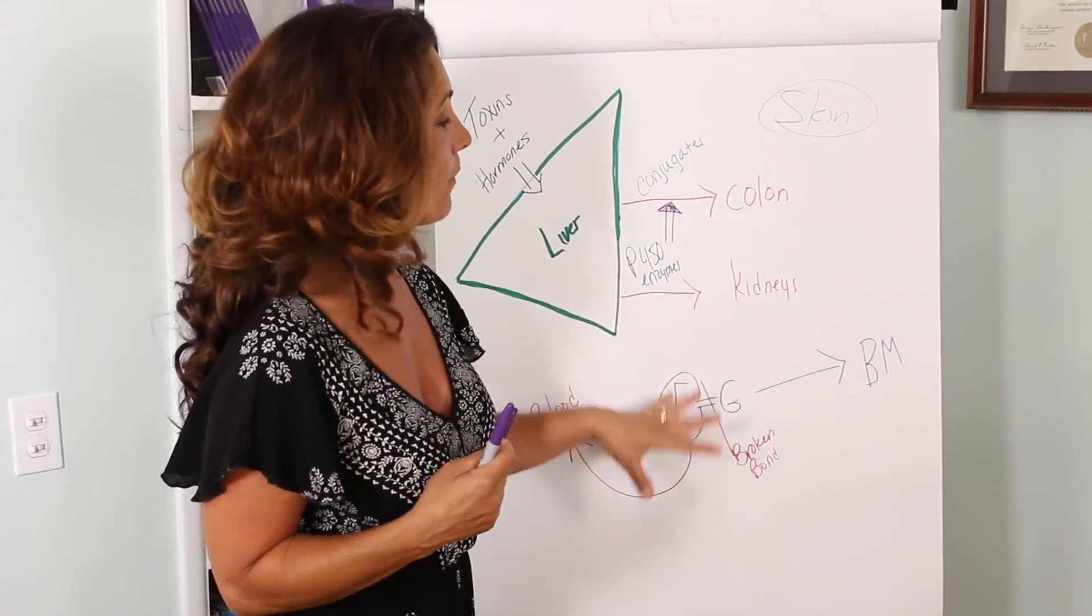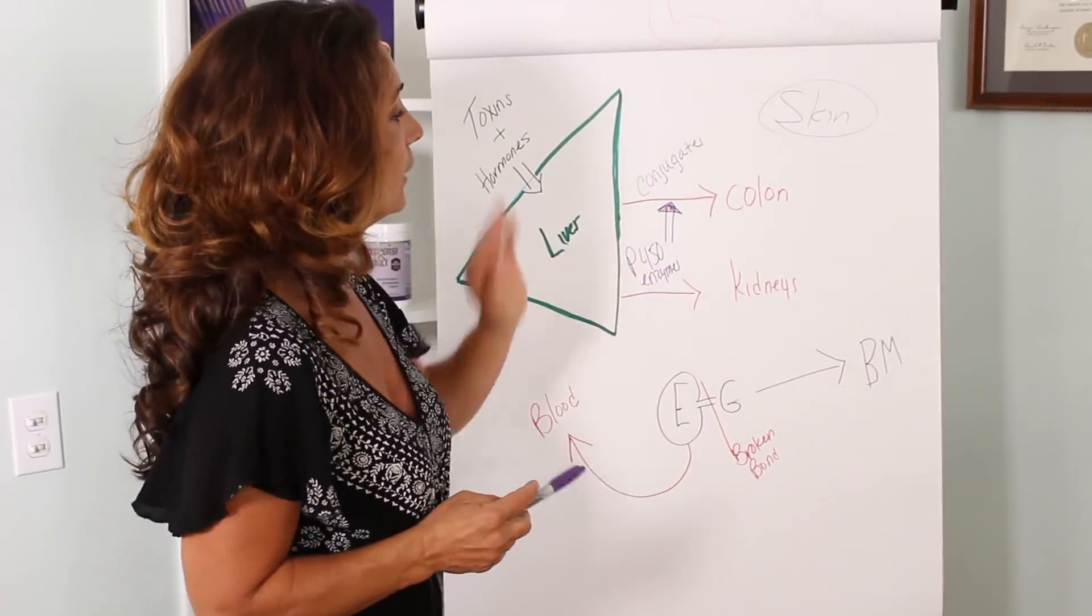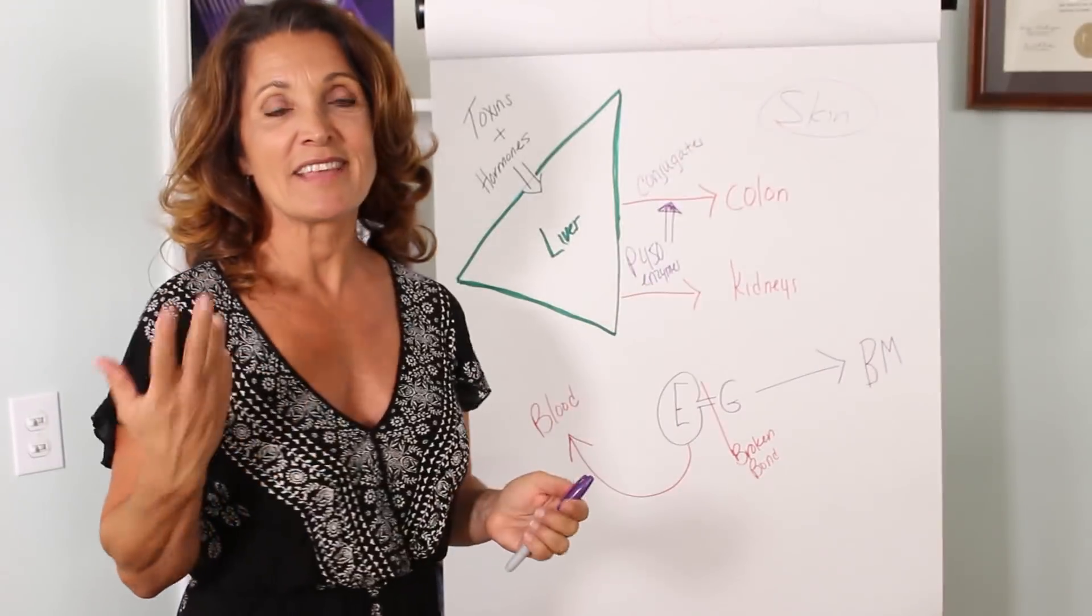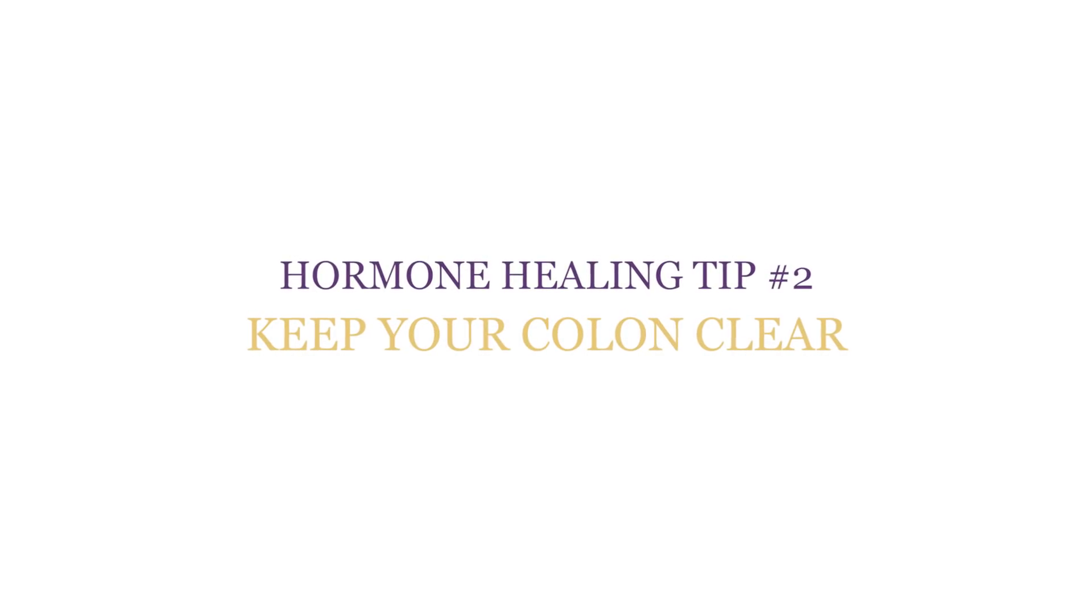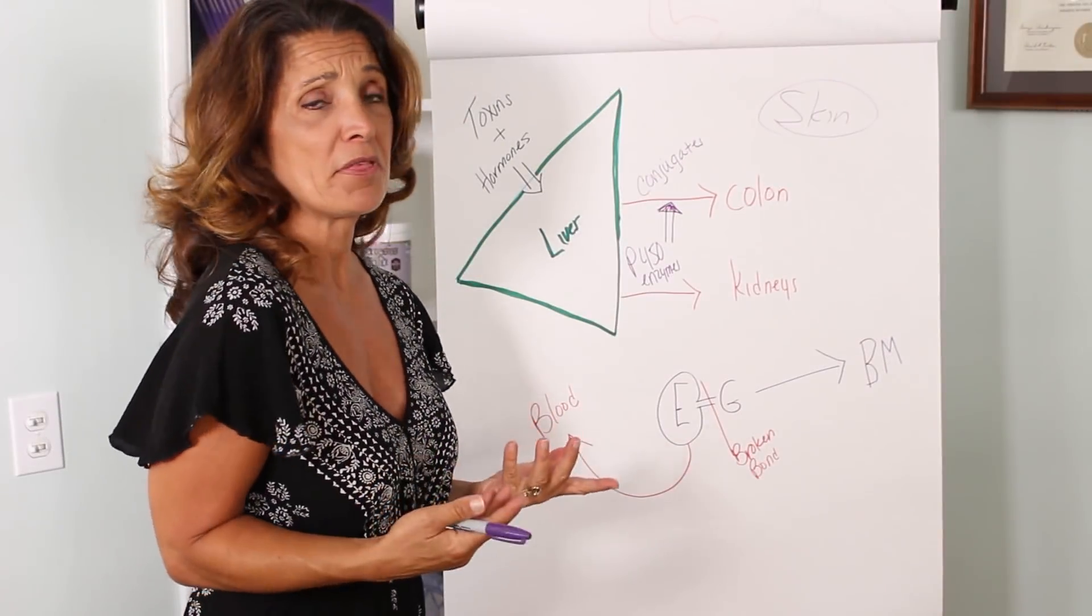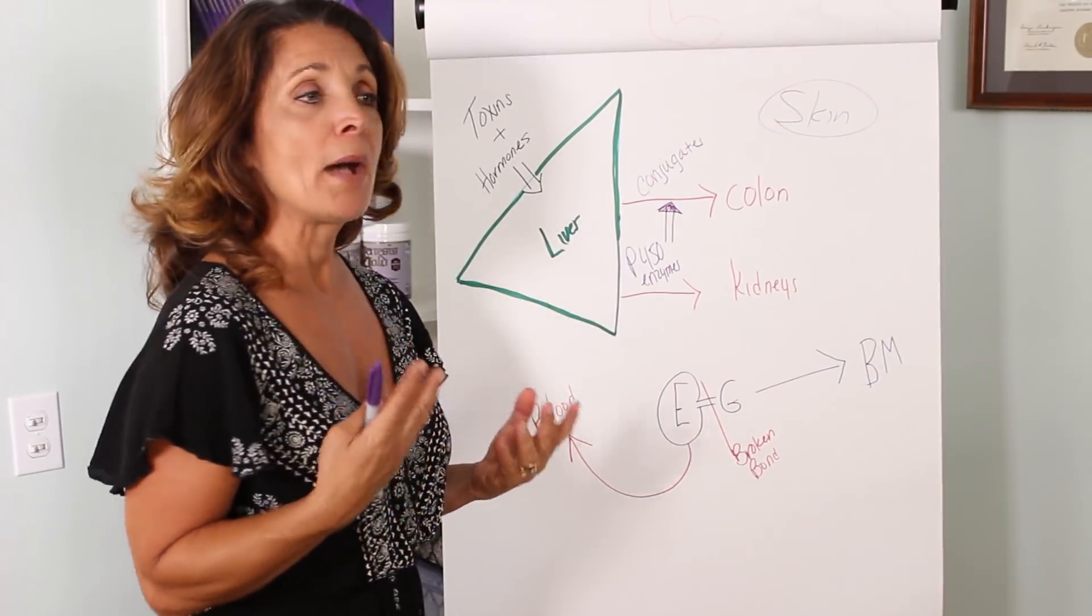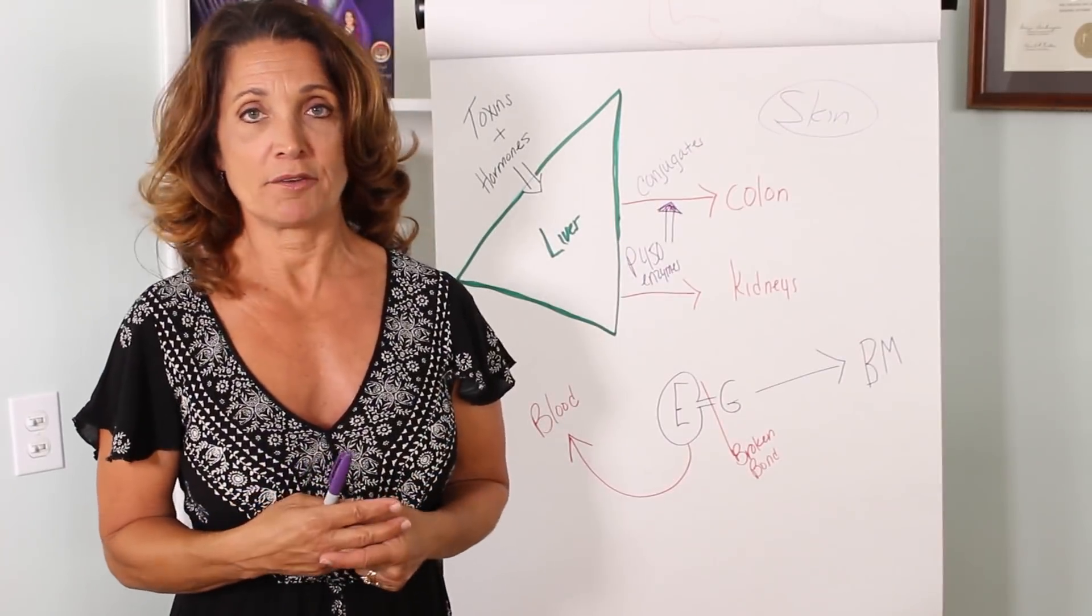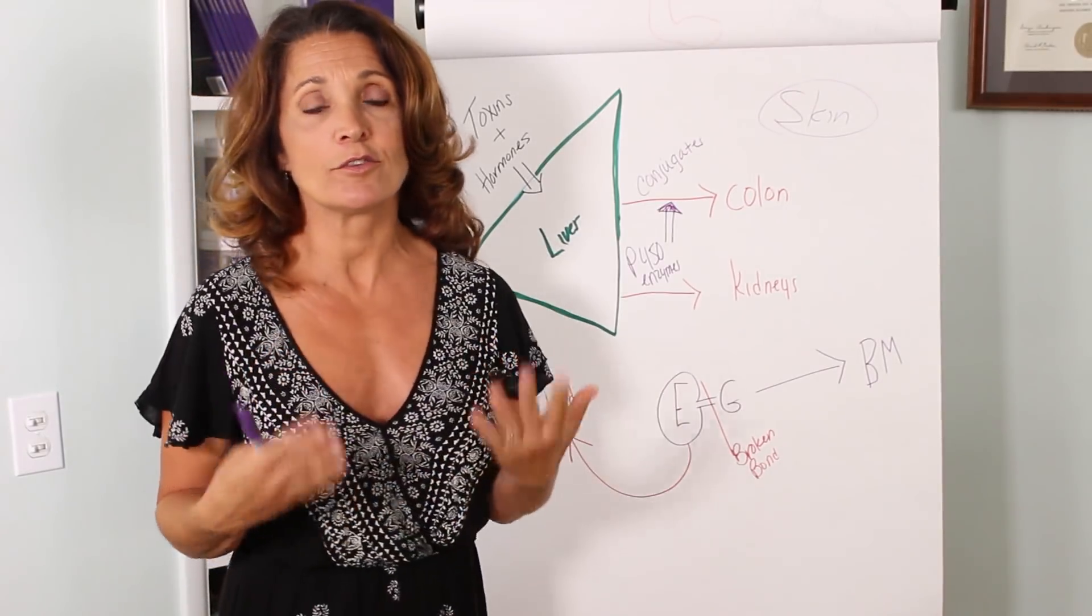Now this is very, very common because oftentimes we don't eat all the foods that we need to actually help our liver. So what's the second thing that you can do to help your liver? Well you can do liver cleanses. There's lots of supplements out there. Milk thistle is a really excellent herb to support the liver. But I really like to do a dietary liver cleanse.